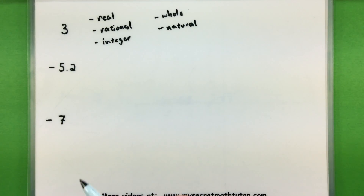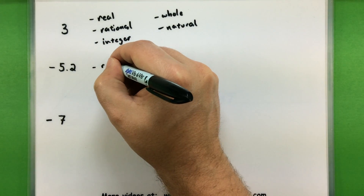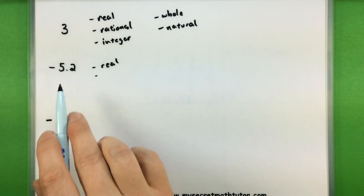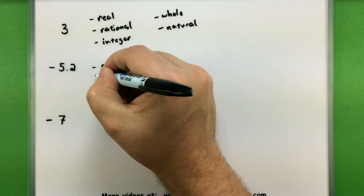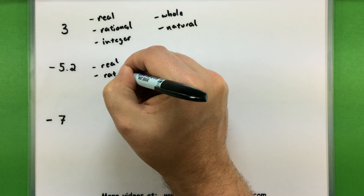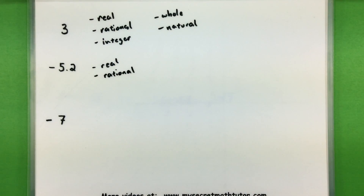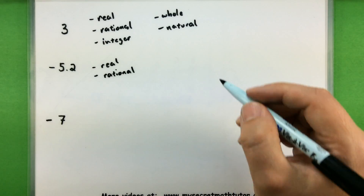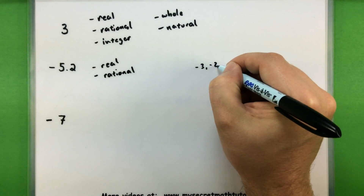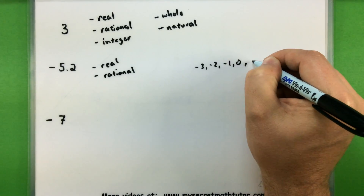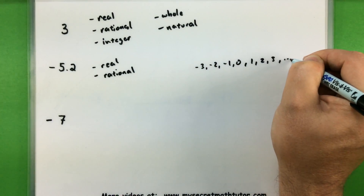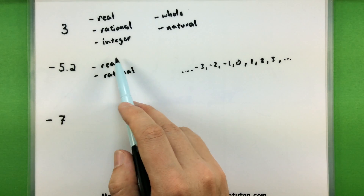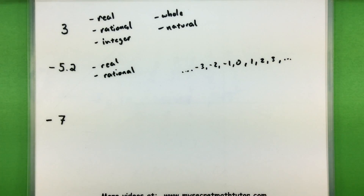Negative 5.2 — we haven't seen any negatives yet, so this is a good one to classify. It is definitely one of our real numbers. Can we write it as a fraction? Notice how this decimal actually just stops — it terminates. If the decimal terminates, we can write it as a fraction, so it is rational. Now is it an integer? It does contain a negative sign, but integers really contain the negatives of the natural numbers, zero, and the natural numbers — no fractions or decimals. So we stop there: it is real and rational.